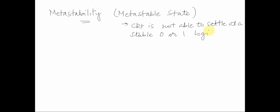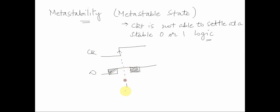A circuit is not able to settle at a stable zero or one logic level. When can this happen? If you recall, we spoke about the concept of setup time and hold time. This metastable state or metastability happens whenever there is a setup and hold time violation. Let's assume this is the clock edge and this is my input D. The setup time is the amount of time before the clock edge for which the input D should be stable to be captured properly, and hold time is the time after the clock event for which we should hold the value of D.